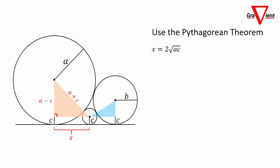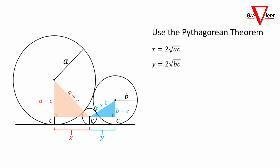Do the same with the circle of radius B. Make a right triangle with base Y. The hypotenuse is B plus C and the other side is B minus C. With the Pythagorean theorem, Y squared equals (B plus C) squared minus (B minus C) squared. With a little algebra, we get Y equals 2 times the square root of BC.